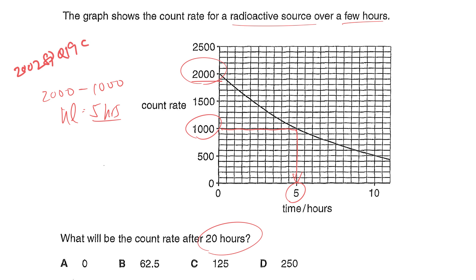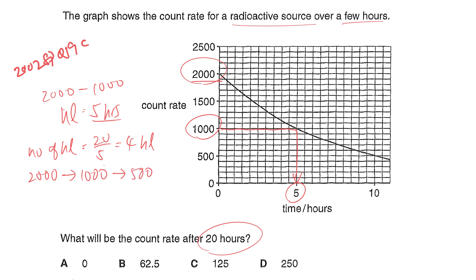To find the count rate after 20 hours, calculate the number of half-lives: 20 divided by 5 equals 4 half-lives. Starting from 2,000: after one half-life → 1,000; two → 500; three → 250; four → 125. After 20 hours, the count rate is 125 counts per hour. The answer is C.